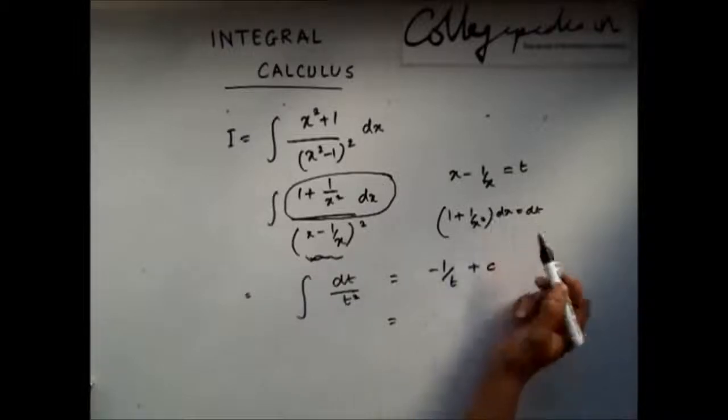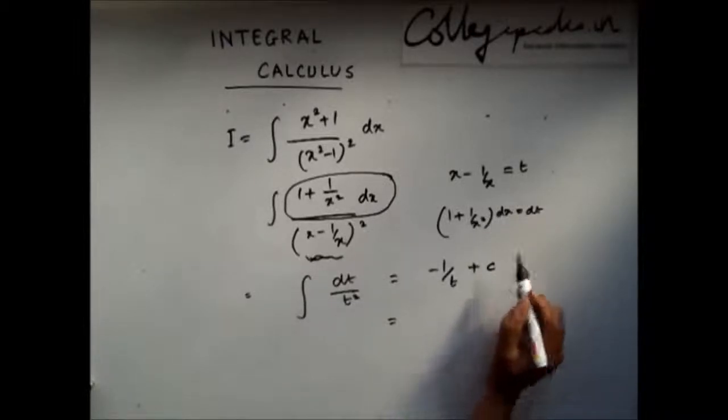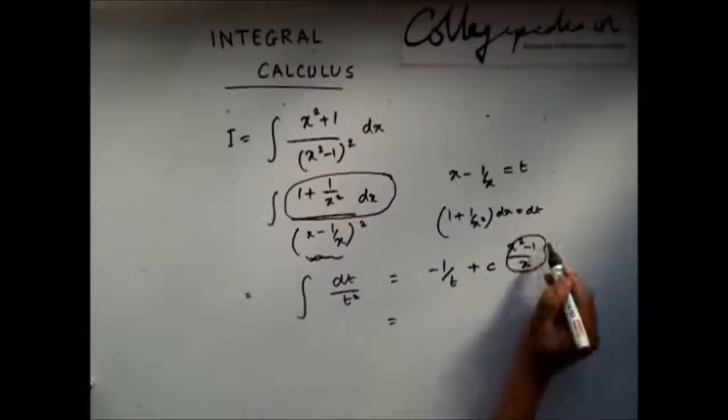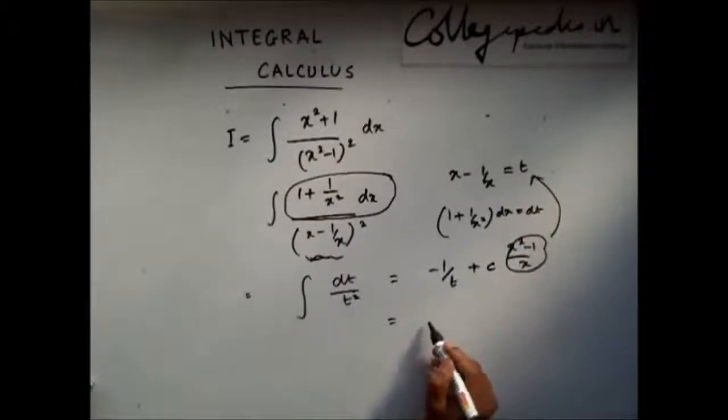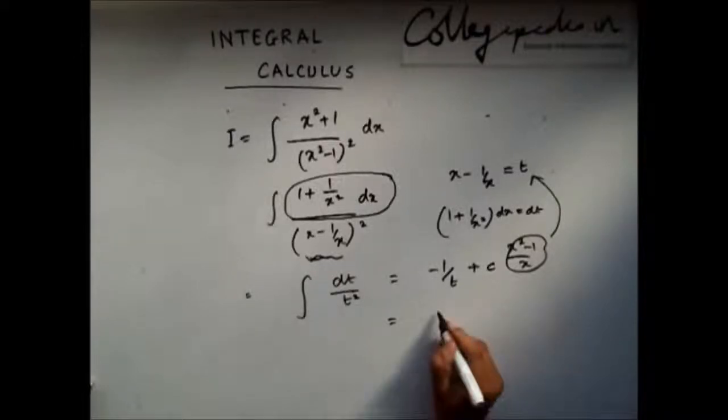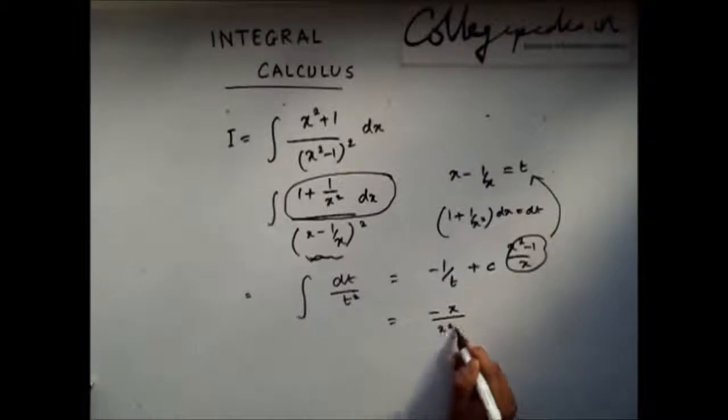Now you can replace t with x square minus 1 by x from here to find the final solution. I hope you can find the final solution. I will write the solution as one by t plus c. This is my answer.